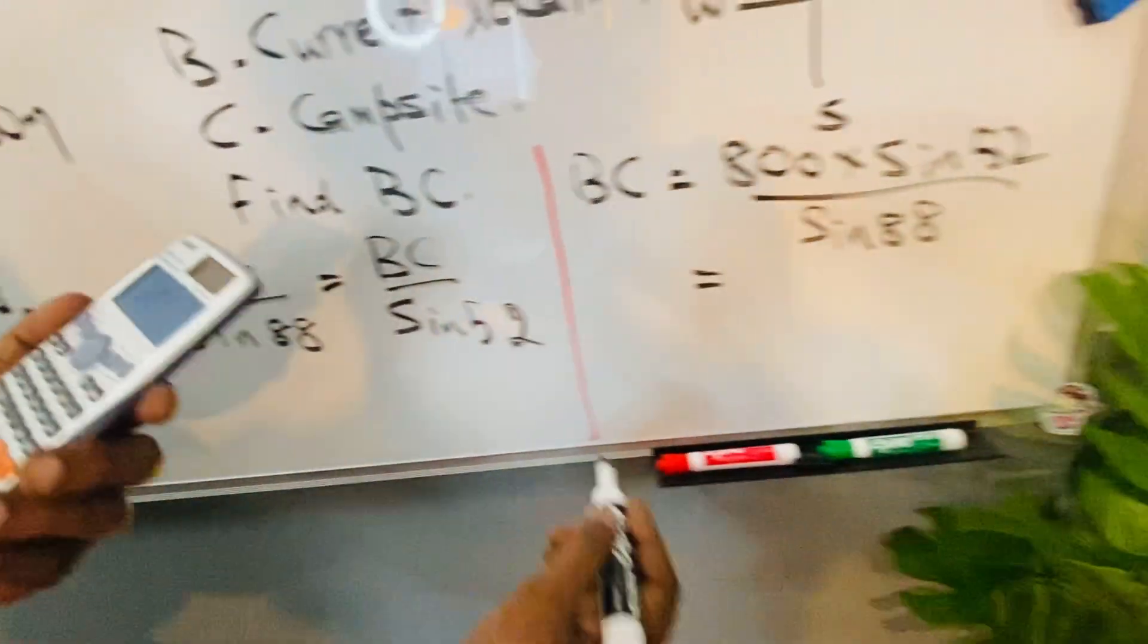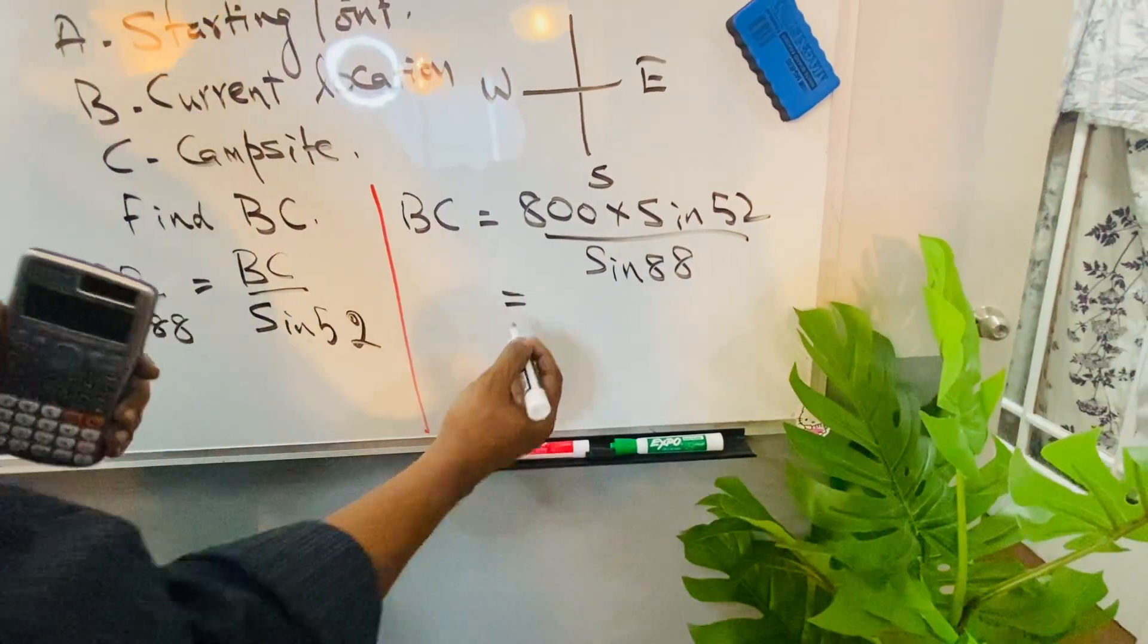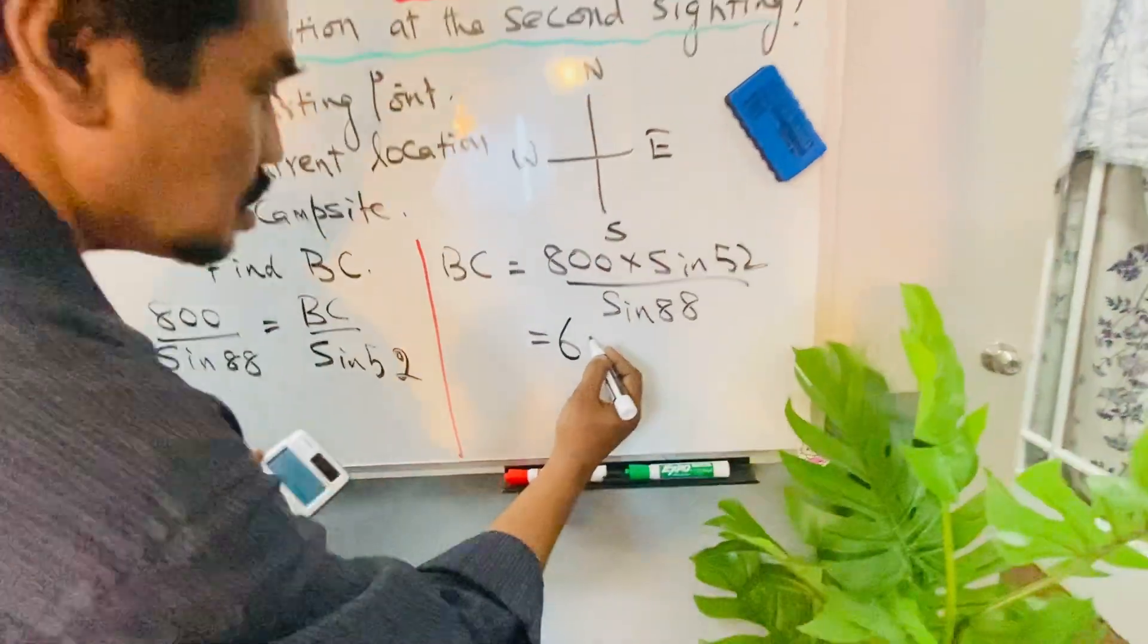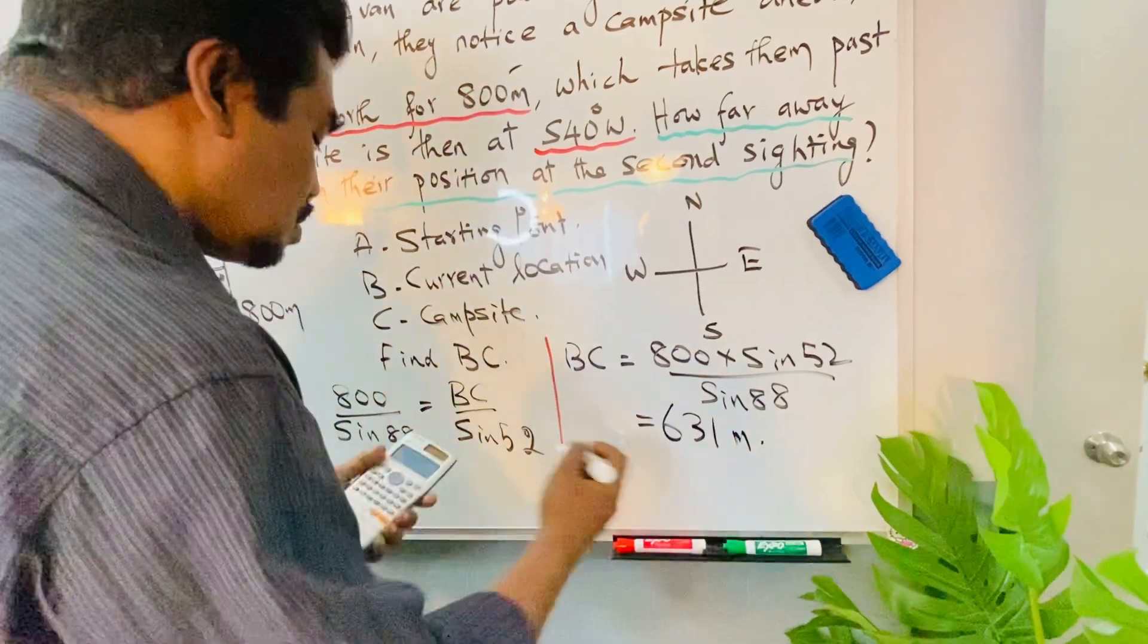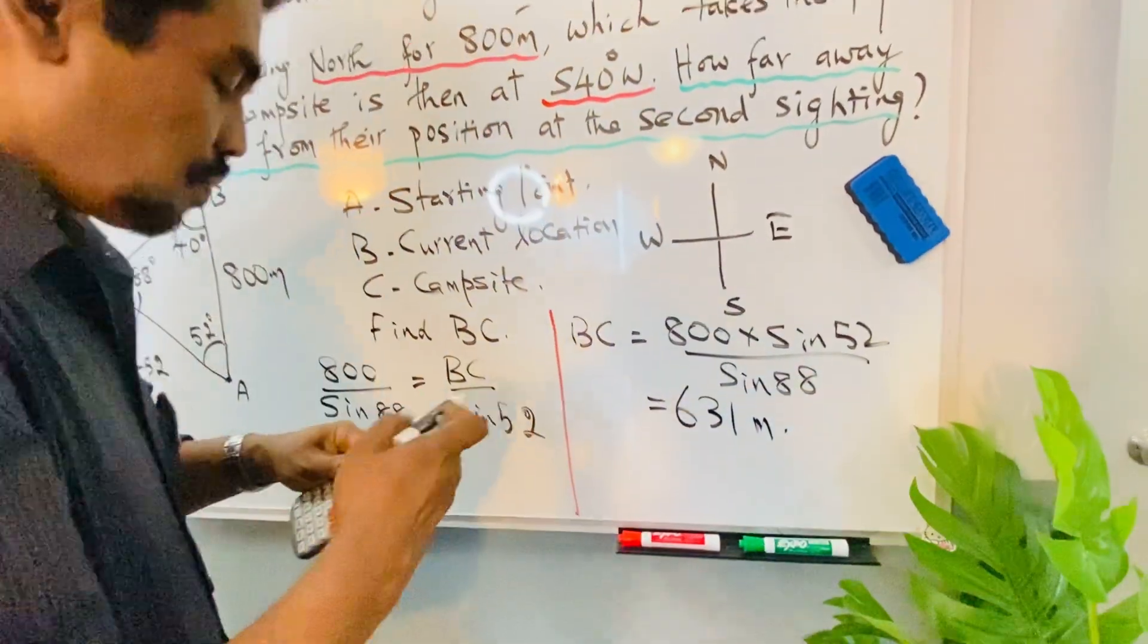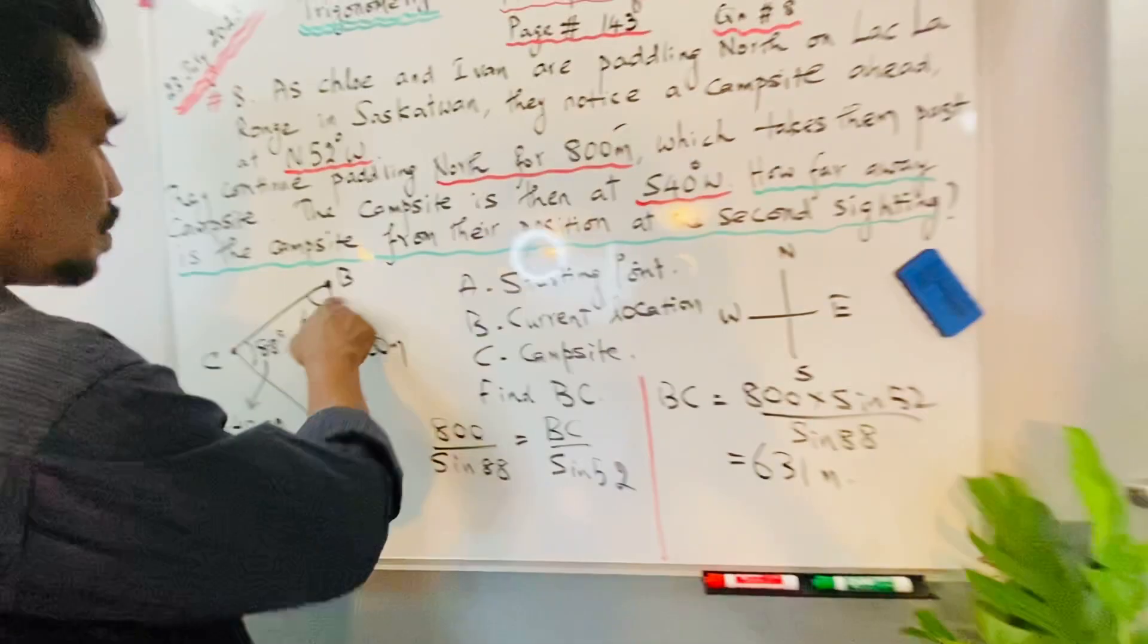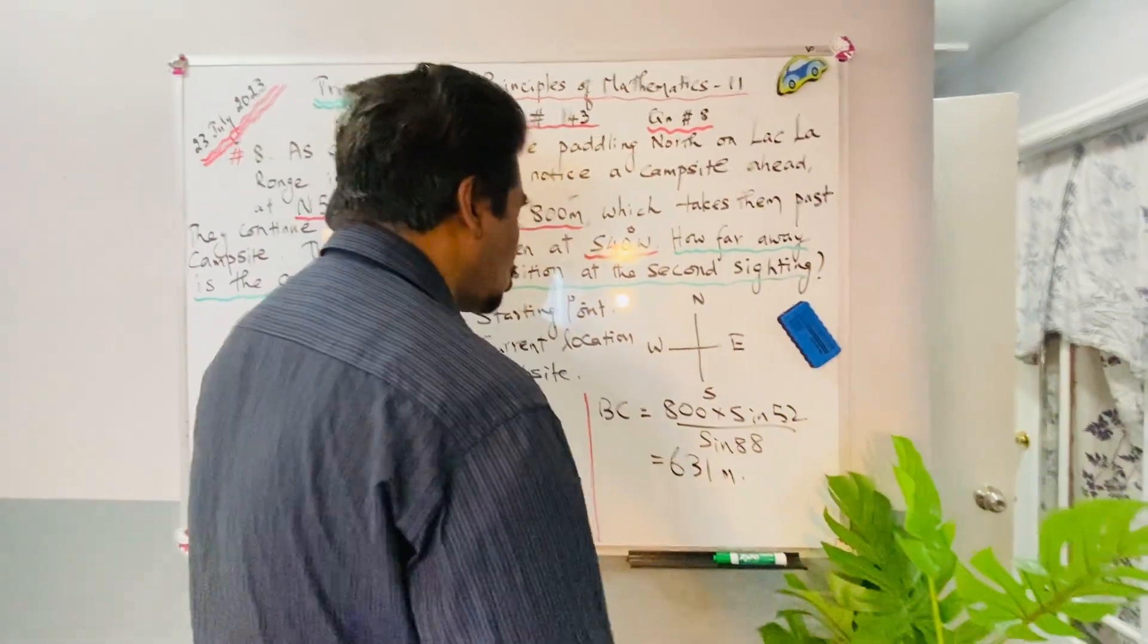The answer will be 630.7. I can round it to the nearest meter: 631 meters. So this is the final answer. They have to travel from B to C, 631 meters. This is the final answer.